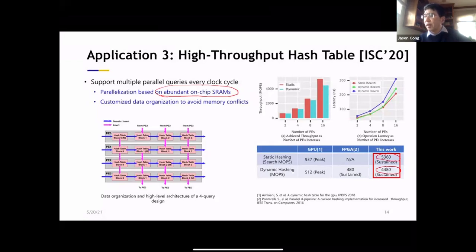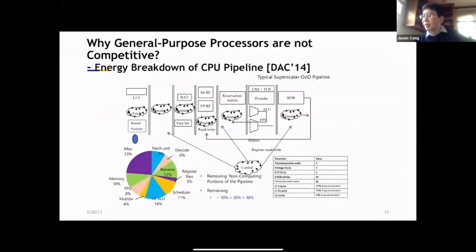So after seeing these examples, you may wonder why the general purpose processor is not so competitive. We can be easily beaten by these accelerators, even though they are on the FPGA fabric.